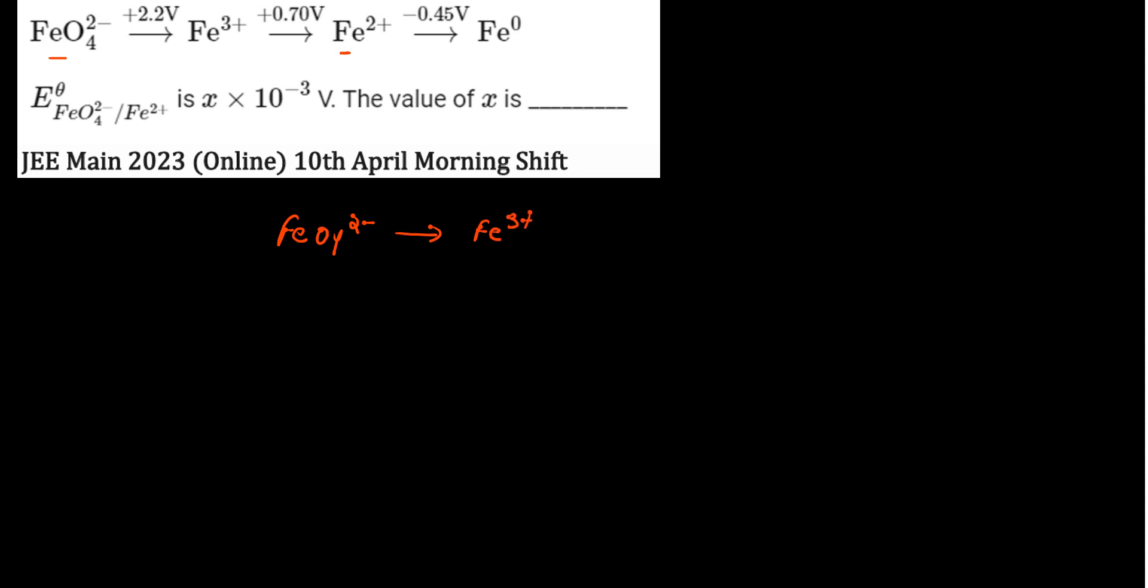and then to Fe²⁺. We need to find the overall E⁰ from FeO₄²⁻ to Fe²⁺. The first given value, E⁰, is 2.2 volts, and from Fe³⁺ to Fe²⁺, the value is 0.70 volts.